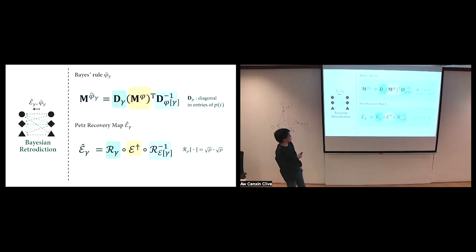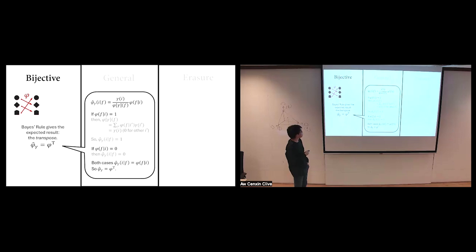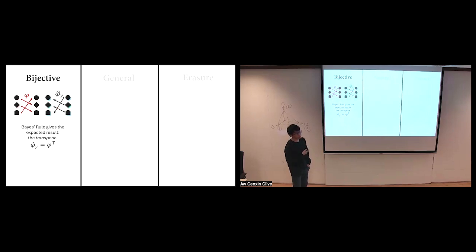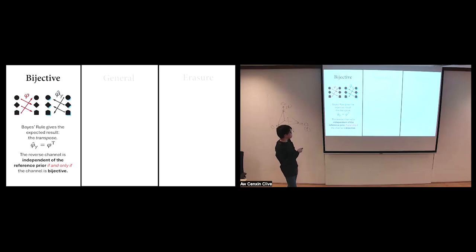It becomes even more obvious when you write the Bayesian reverse process as a matrix - the Bayesian inversion - and compare to the PETS map. They really operate on states in a similar sequence. Applying this to a bijective channel, Bayes' rule gives the expected result: the transpose. One of the earliest results proved was that the reverse channel is independent of the reference prior if and only if the channel is bijective. Every non-bijective channel requires some form of reference prior to define the reverse process.